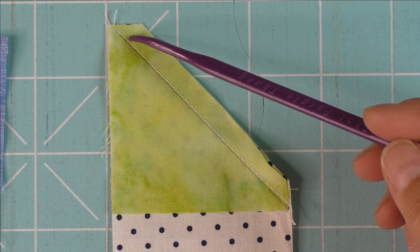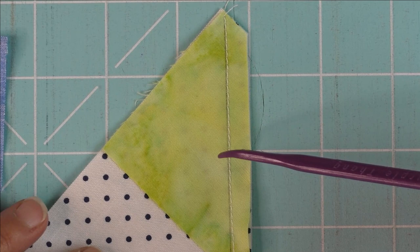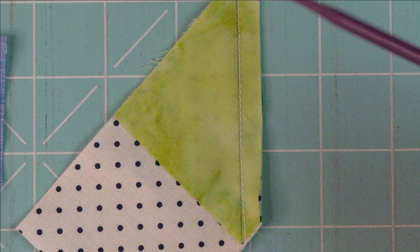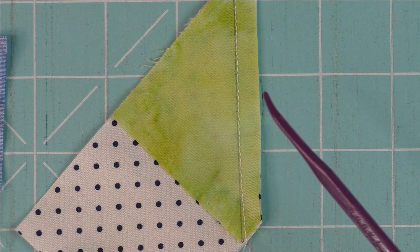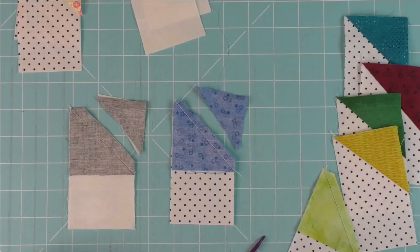I wanted to show you the stitch and flip piece. I find it easier to stitch a little bit to the right of the drawn line of the diagonal line. If you're sewing like this, this is the corner you're going to cut off, so just to the right next to the drawn line. I know it's hard to see it here, but that gives you better points.